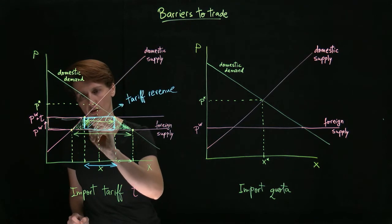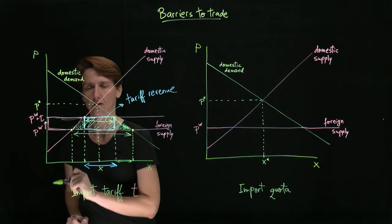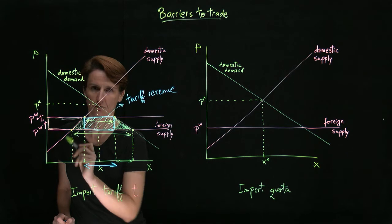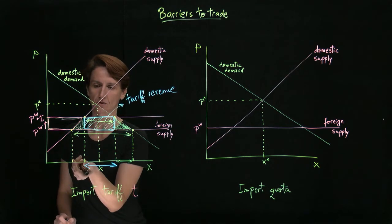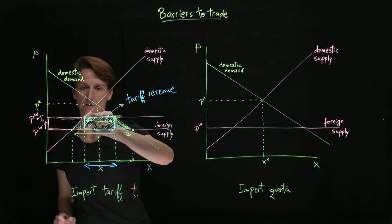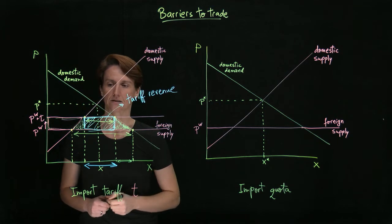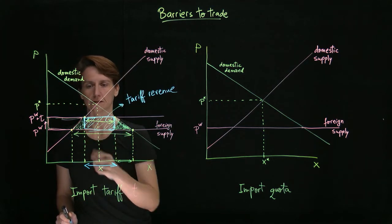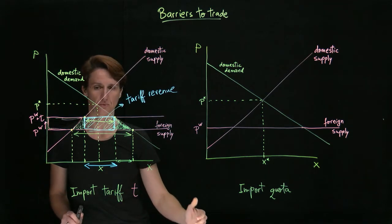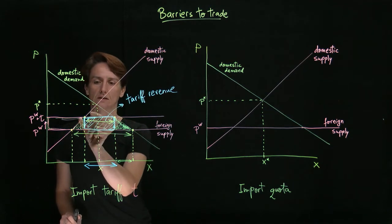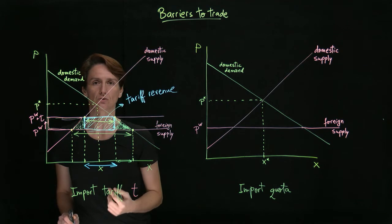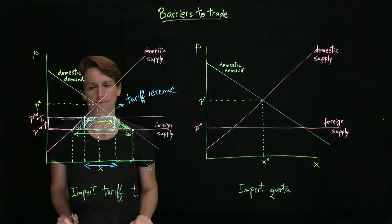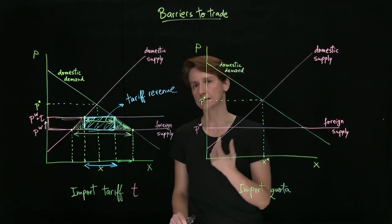There is surplus loss here because foreign producers were able to make that good more cheaply than domestic producers. Domestic producers have this cost per unit, foreign producers had the cost of Pw per unit. So for each one of those, that vertical distance added is extra cost that's incurred in production domestically versus abroad. So it's an economic surplus loss that's due to inefficient production as opposed to lost consumption.